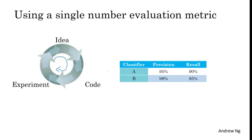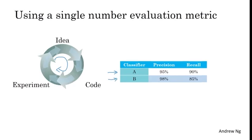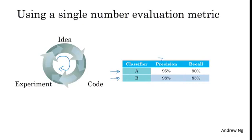So let's say for your cat classifier, you have previously built some classifier A, and by changing the hyperparameters or the training sets or some other thing, you've now trained a new classifier B. One reasonable way to evaluate the performance of your classifiers is to look at precision and recall. The exact details of what's precision and recall don't matter too much for this example, but briefly, the definition of precision is: of the examples that your classifier recognized as cats, what percentage actually are cats?